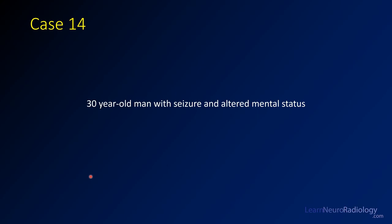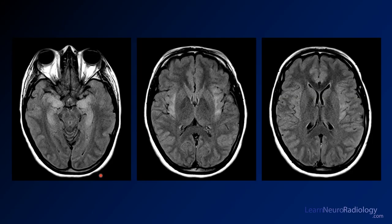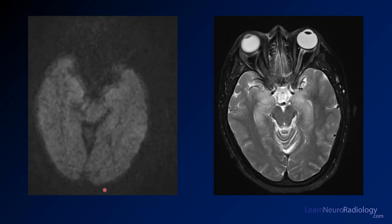Case 14 is a 30-year-old man with seizure and altered mental status. Here we have a couple of levels of FLAIR throughout the brain parenchyma. Here you have a single image from diffusion and a T2-weighted image from the level of the hippocampus.